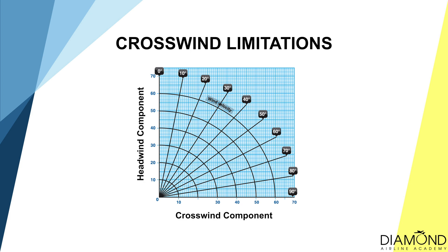Before practicing crosswind circuits, there are a couple of things that we have to be aware of. Firstly, during certification of an aircraft, a maximum demonstrated crosswind limit will be published by the manufacturer. On a Diamond DA-40, the crosswind limit is 20 knots of crosswind. When the crosswind component is higher than this figure, it is probably a wise decision to not go flying.